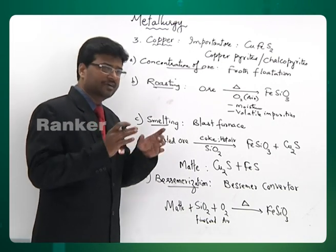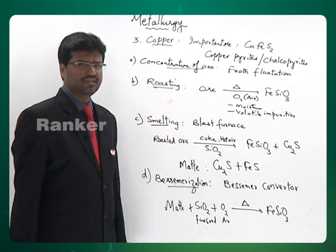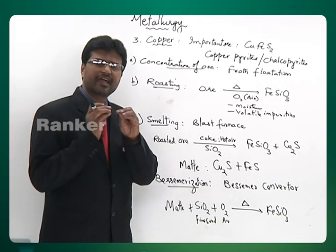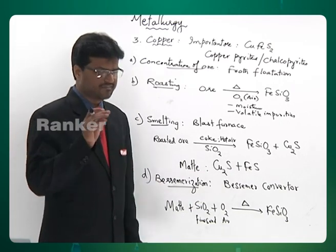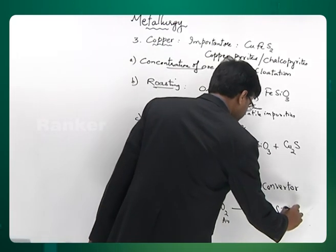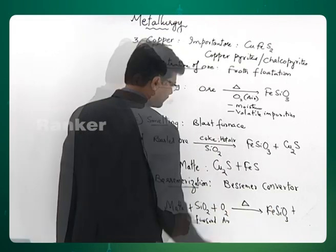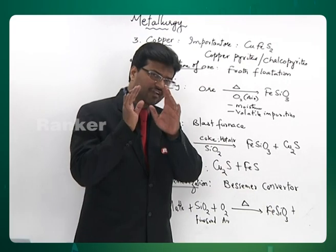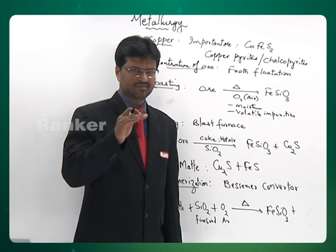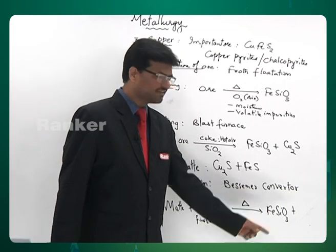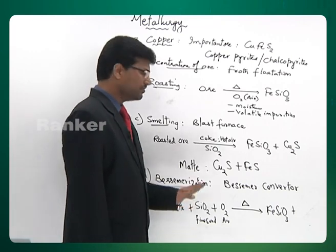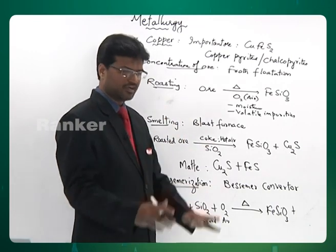The FeSiO₃ appears as a green flame at the mouth of the Bessemer converter. This time you lose all the Fe as FeSiO₃. When the colour of the flame at the mouth of the converter changes — it burns with a green flame as long as Fe is present — you can assume that all the Fe has been lost.